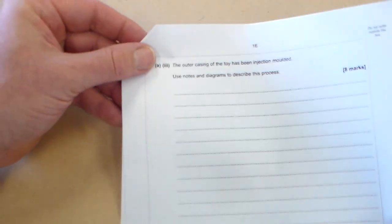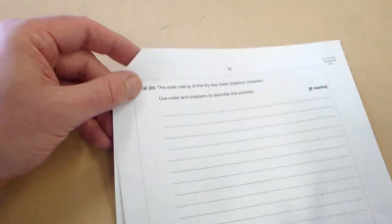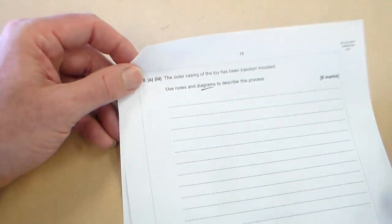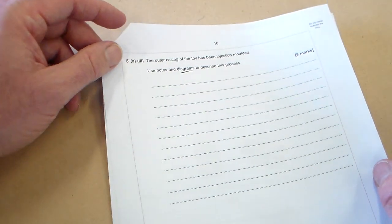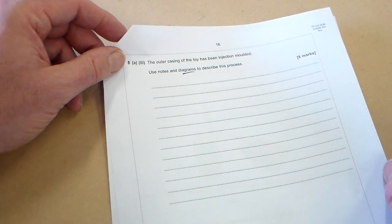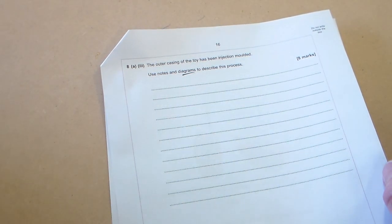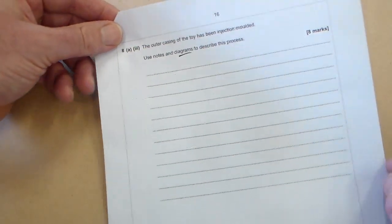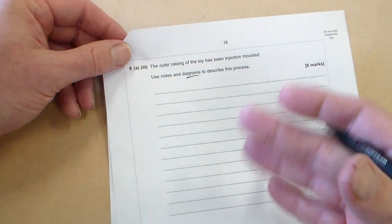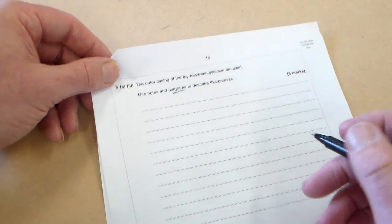Now the second part is the outer casing of the toy has been injection molded. Use notes and diagrams to describe this process. Now this is eight marks. So we're going to talk about this process. You could answer in bullet points, but I would keep away from that if you can.